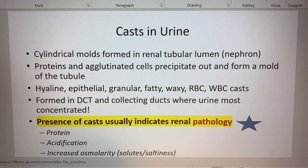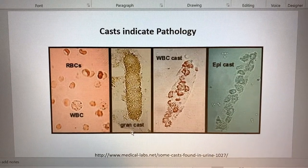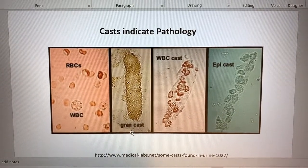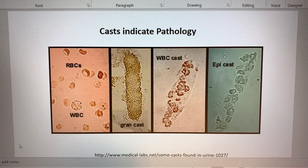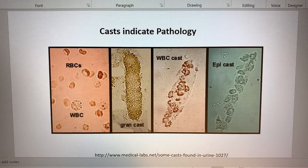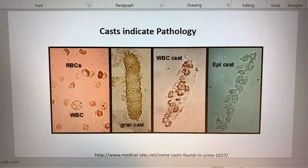Let's look again at some pictures of casts. Here we have a granular cast, a white blood cell cast, and an epithelial cell cast. The main thing to note is that a cast is usually pathological when you see that in a sample.